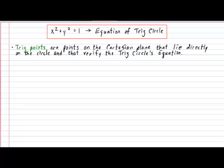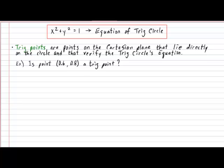Here's a quick example of how to verify if any given point on the Cartesian plane is in fact a trig point. The first example is to verify if the point (0.6, 0.8) is in fact a trig point. What we need to check is if you add the squared values of the x and y coordinates, will it equal 1 — the radius of the trig circle? And if you check your procedure very carefully, you will find that indeed the point (0.6, 0.8) is in fact directly on the circle. So it's safe to say that the point (0.6, 0.8) is in fact a trig point.